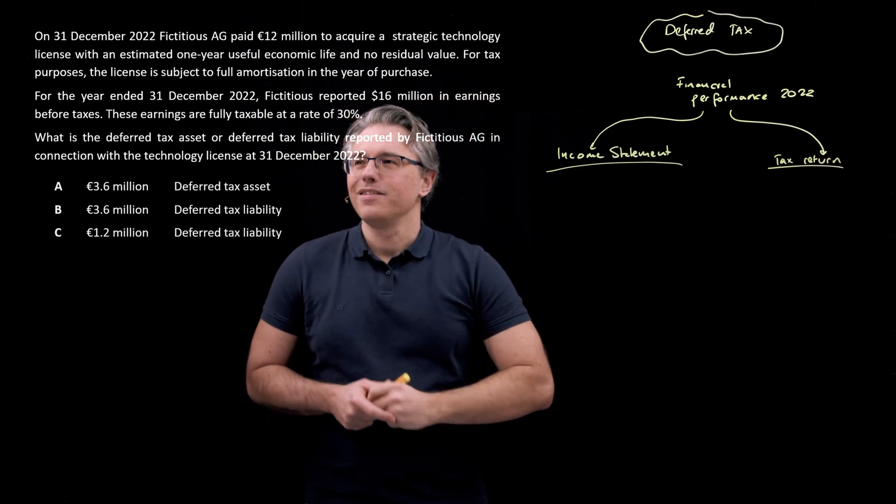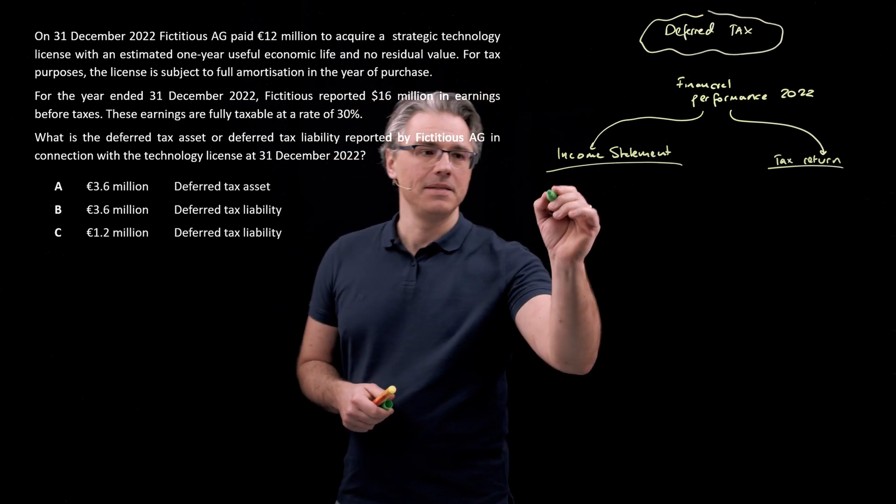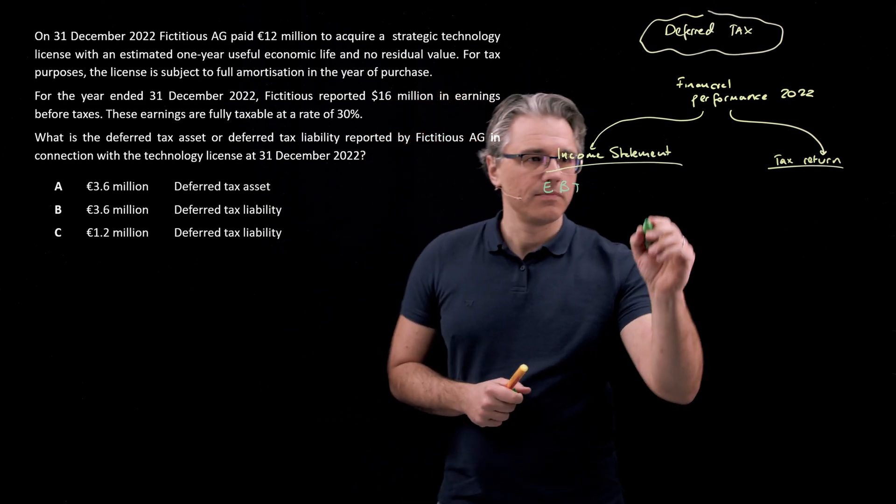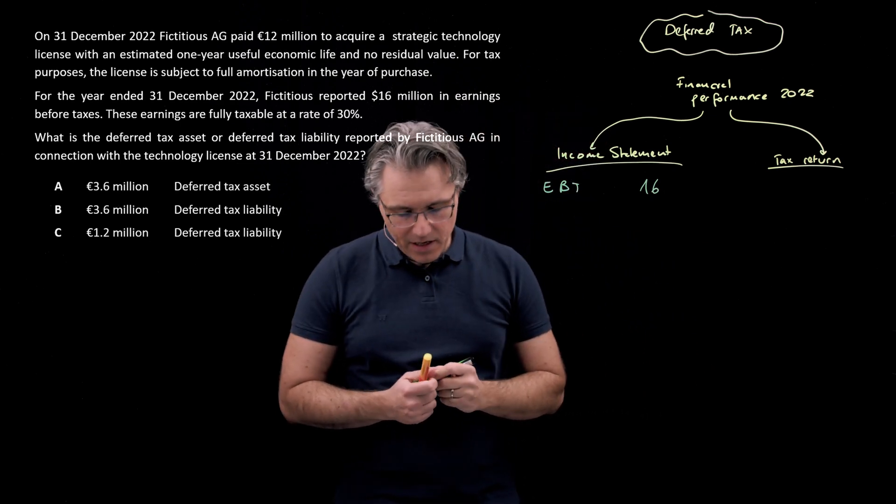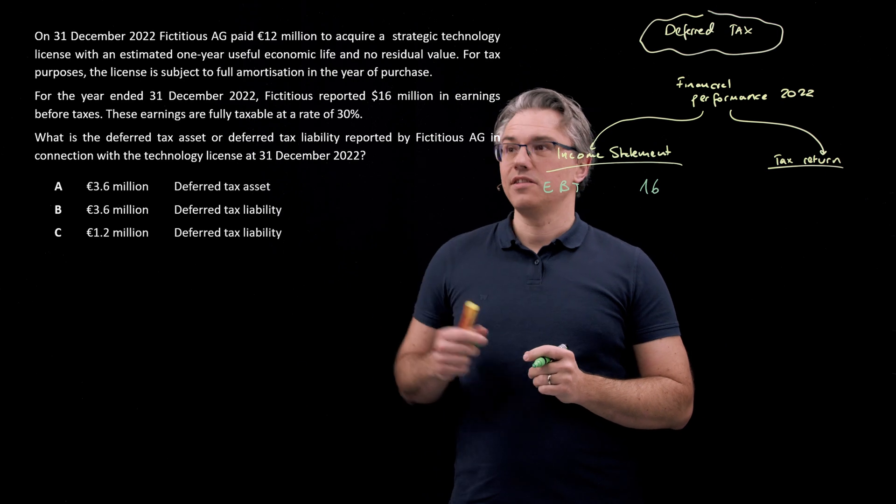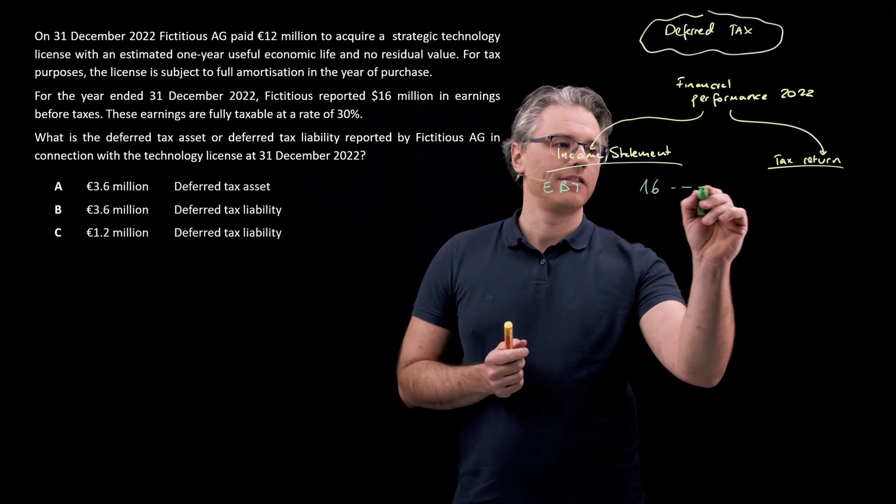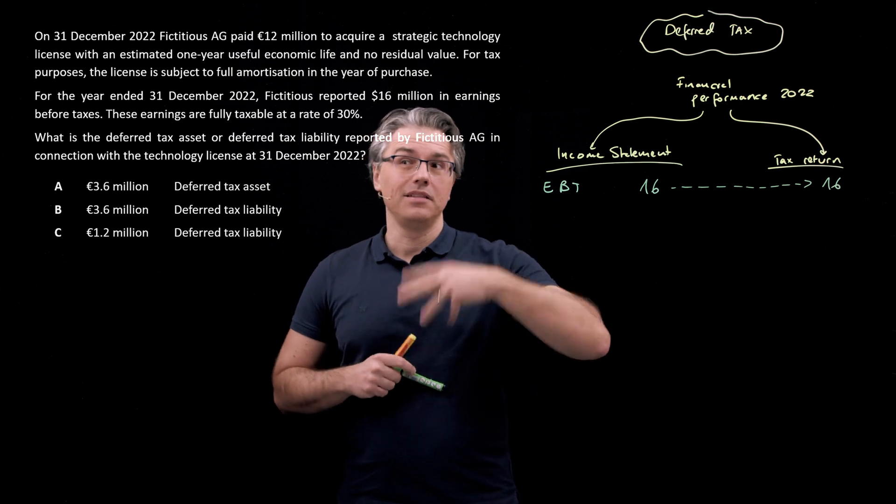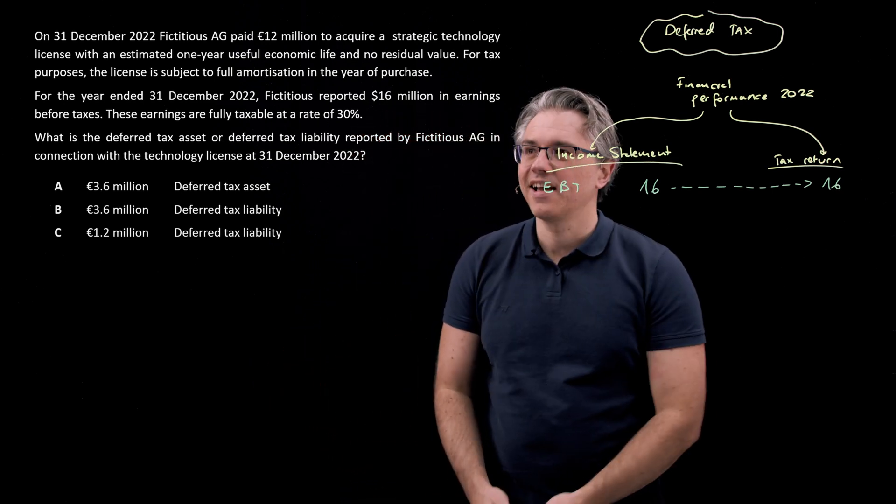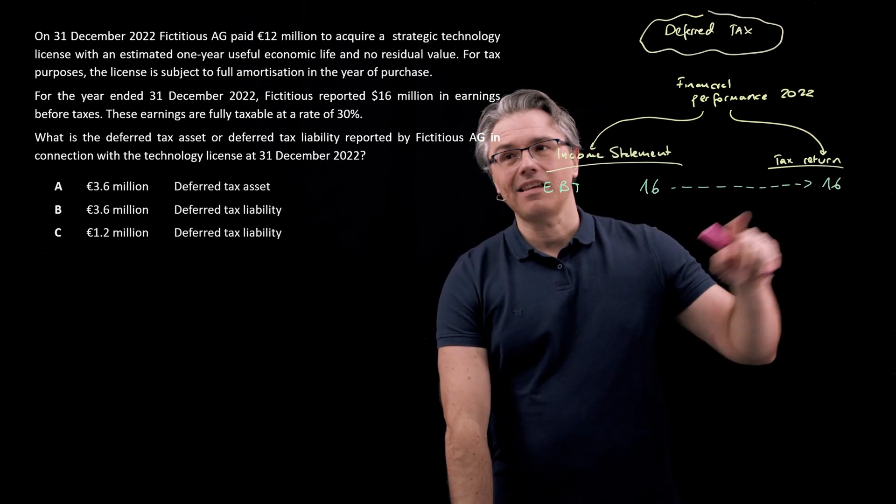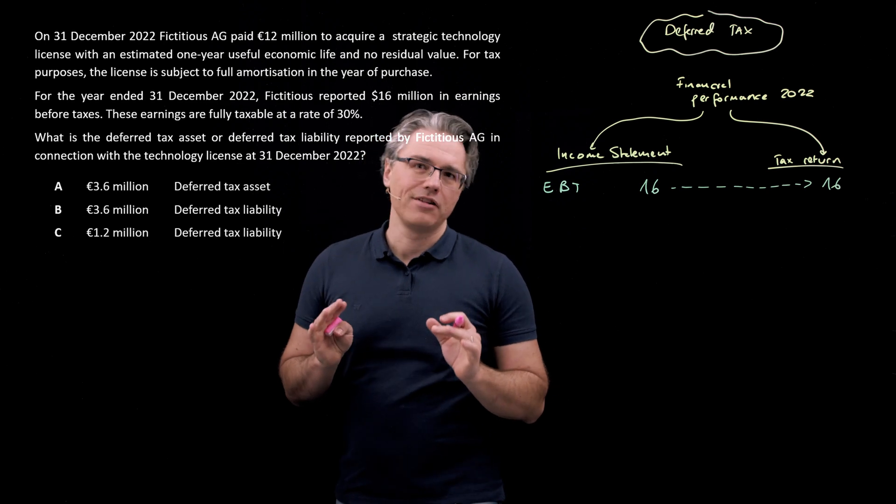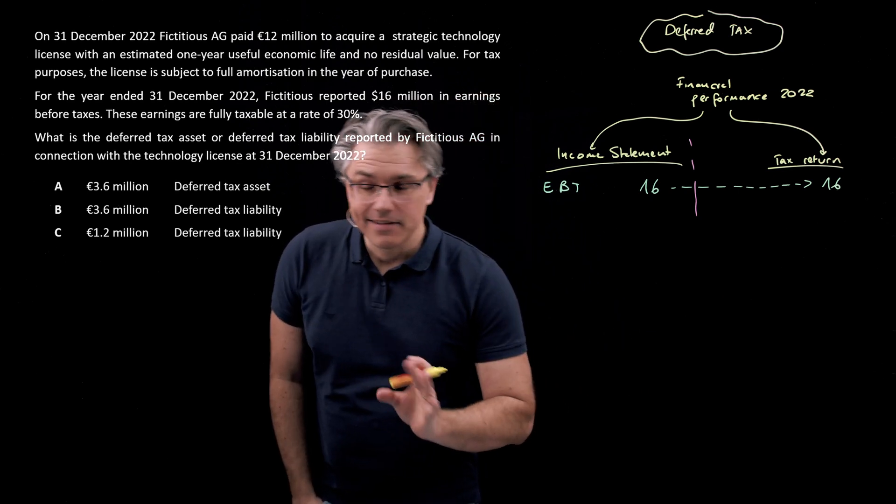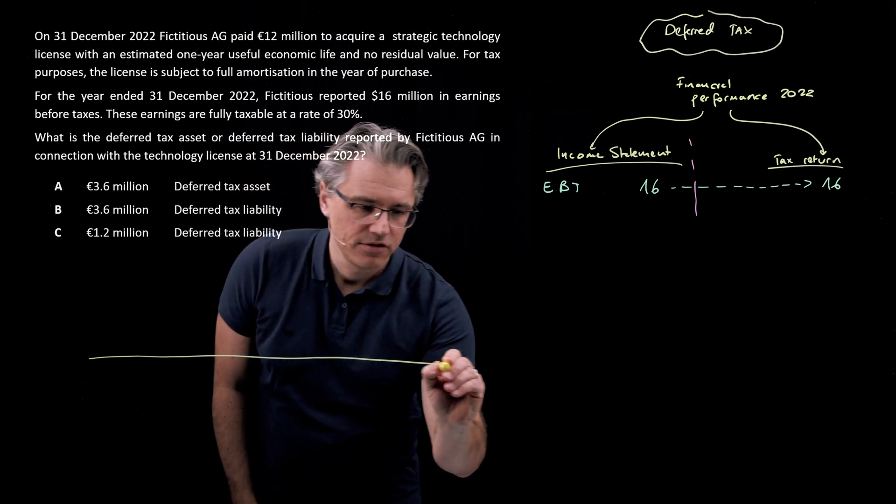So this earnings before tax, EBT, which we're told was 16 million, I'm going to put this into our income statement. They're also going to enter my tax return, but I'm assuming that the depreciation, not depreciation, amortization because it's an intangible asset, is not included here. Now obviously from a financial statements perspective, I'm not in the income statement going to have any amortization yet.